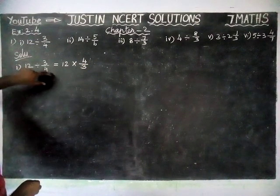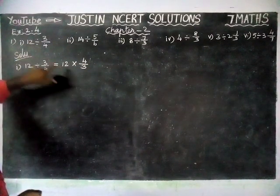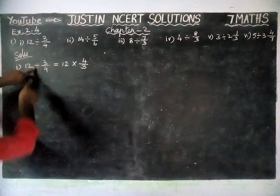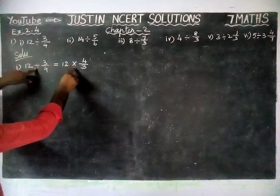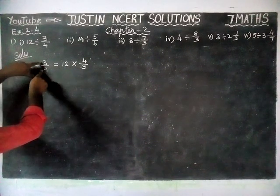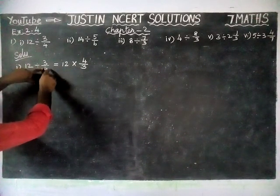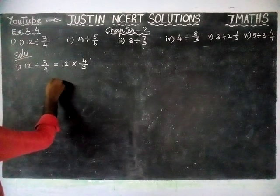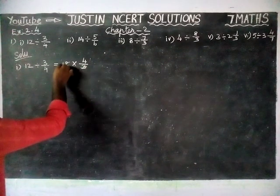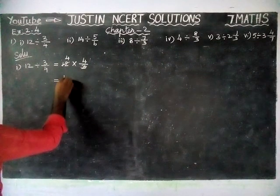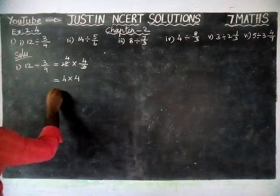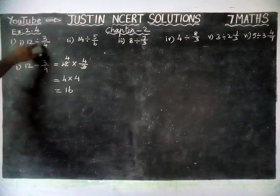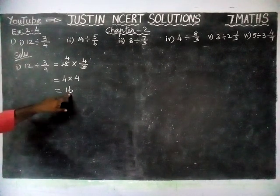Numerator will come to denominator, denominator will go to numerator. So, 12 into 4/3. Here the division symbol is changed to multiplication symbol and 3/4 becomes its reciprocal 4/3. Now we can simplify: 12 into 4 divided by 3. 4 into 4 is equal to 16. So, 12 divided by 3/4 is equal to 16.